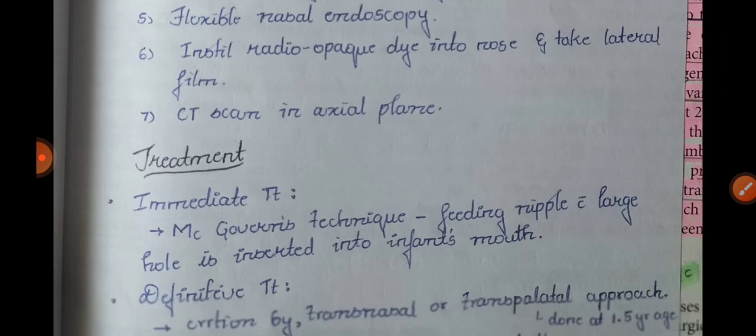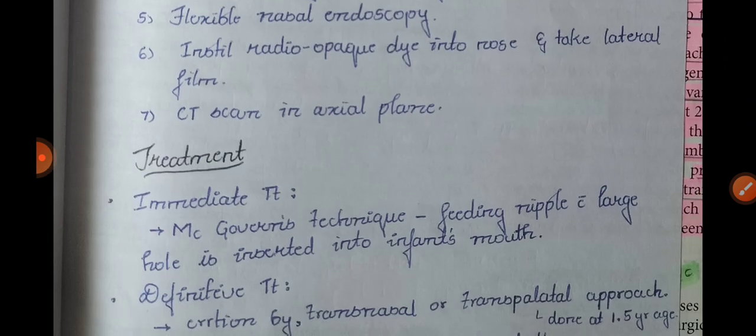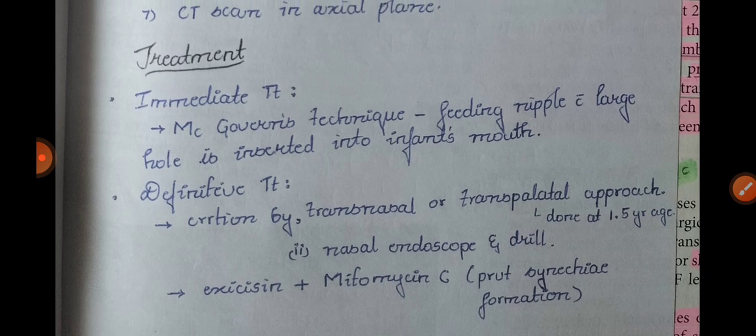How will you treat Choanal Atresia? The immediate treatment is the McGovern technique. A feeding nipple with a large hole is inserted into the infant's mouth and kept there, allowing both breathing and feeding to occur simultaneously.